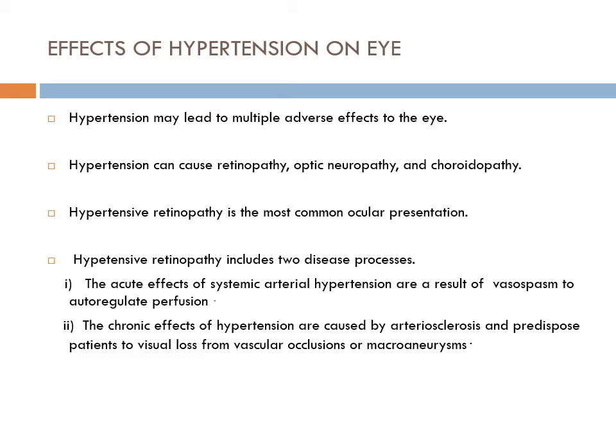A question for PT students: what is the pathophysiology of optic neuropathy due to hypertension, and what is the pathophysiology of choroidopathy due to hypertension? Hypertensive retinopathy involves two disease processes: acute effects from systemic arterial hypertension as a result of vasospasm, and chronic effects caused by arteriosclerosis, predisposing patients to visual loss from vascular occlusions and macular sclerosis.